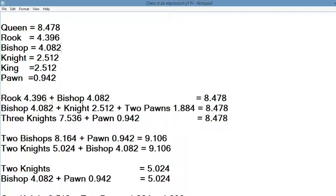A rook plus the bishop equals 8.478, same thing as the queen. And it's my contention that they are equal to the queen. A bishop, a knight, and two pawns are equal to a queen. Bishop, knight, two pawns, same number. Three knights, we're just talking theoretical, you can actually have three knights on the board, but three knights and a pawn equal to a queen.